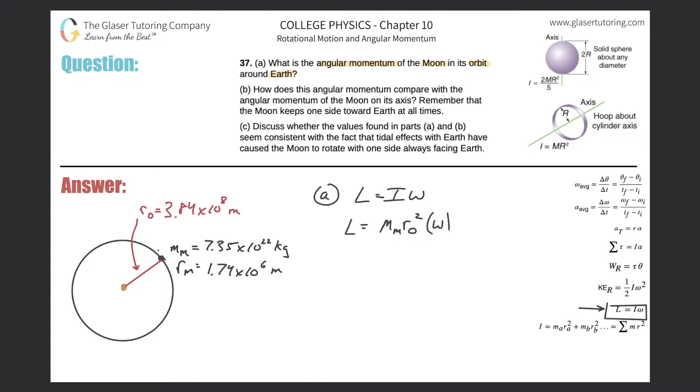So now I can start plugging in some values. So the mass of the moon, 7.35 times 10 to the 22nd. The radius of the orbit is going to be about 3.84 times 10 to the 8. That's squared. And now the angular velocity. So this part, not as clear, but it's fairly straightforward.